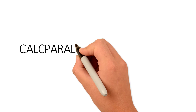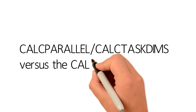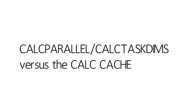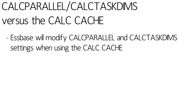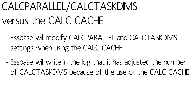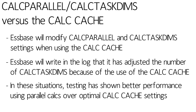There's a conflict that can occur between the CalcParallel and CalcTaskDims settings and the CalcCache settings. If you are trying to use the S-Base calculator cache, which in some cases can be a good thing, S-Base will actually look at your CalcParallel and your CalcTaskDims and modify them to better take advantage of the CalcCache. It's actually going to write in the log that it fiddled with your CalcTaskDims because it was trying to use the calculator cache. In general, parallel calculation is much more important than optimizing the CalcCache. If you're trying to optimize for CalcCache, you're probably putting fairly large sparse dimensions at the end of your outline.